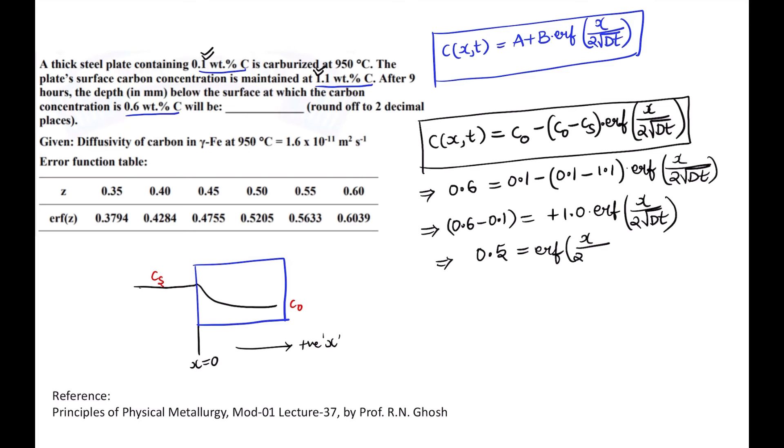So the first task that you need to do is calculating what is the value of my error function. From the given table you can easily see from the error function table, so error function of something is equal to 0.5, so it is approximately equal to this thing. So erf(x) = 0.5 is somewhere here. So you can take this to be x/(2√Dt) is equal to 0.5. So that would be equal to x equal to √Dt.